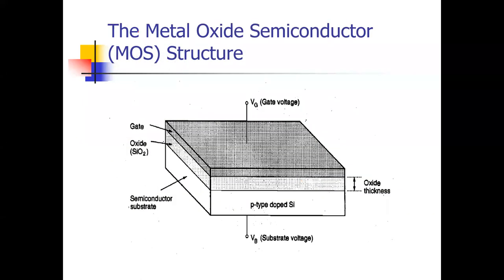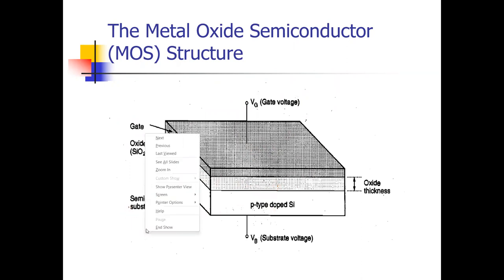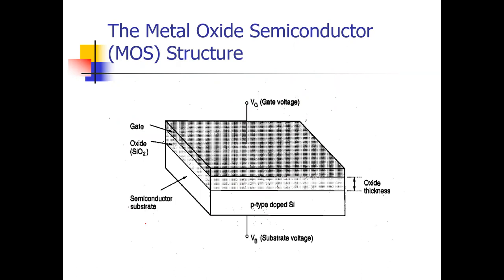This is the structure of the MOSFET. MOSFET has four terminals: source, gate, drain, and substrate. First, see why it is called MOS. The upper part is metal, in between there is an oxide layer O, and the lower part is the substrate. That's why its name is Metal Oxide Semiconductor.